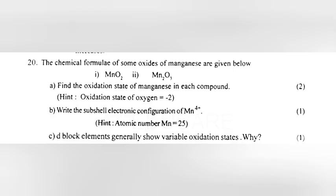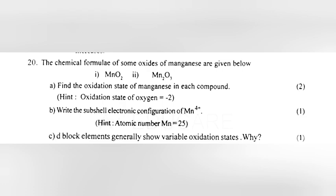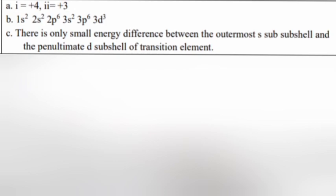Question 20: The chemical formula of some oxides of manganese are given below. 20a: Find the oxidation state of manganese in each compound. 20b: Write the subshell electronic configuration of Mn4+. Answer: 1s2, 2s2, 2p6, 3s2, 3p6, 3d3. 20c: D-block elements generally show variable oxidation state. Why? Answer: There is only small energy difference between the outermost S subshell and the penultimate D subshell of transition elements.